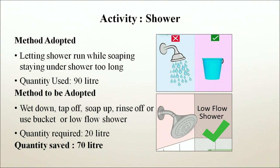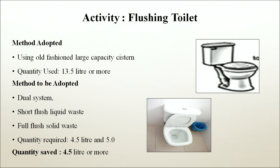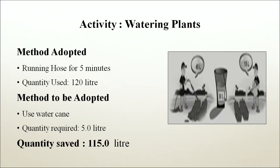For showering — letting the shower run while soaping and staying under too long uses 90 litres; using the wet-down, tape-off, soap-up, rinse-off method or a bucket or low-flow shower requires 20 litres, saving 70 litres. For flushing the toilet — using an old-fashioned large capacity cistern uses 13.5 litres or more; using a dual system (short flush for liquid waste, full flush for solid waste) requires 4.5 to 5 litres, saving 45 litres or more. For watering plants — running a hose for 5 minutes uses 120 litres; using a watering can requires 5 litres, saving 115 litres. For washing the floor — running a hose for 5 minutes uses 200 litres; using a mop and bucket requires 18 litres, saving 182 litres.